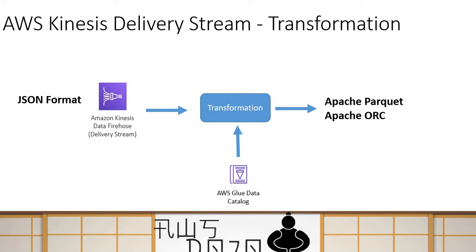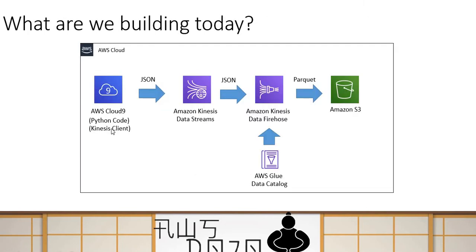Let's see what we are going to implement. We will configure a Kinesis Data Stream to ingest data, and that data will be ingested using a Cloud9-based Kinesis client in JSON format. We will then use Kinesis Firehose to create a delivery stream that converts JSON into Parquet and stores it in S3. To perform that conversion we will use a Glue catalog.